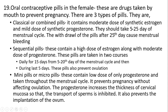Oral contraceptives in females: drugs taken by mouth to prevent pregnancy. There are three types. Classic or combination pills contain a moderate dose of synthetic estrogen and a mild dose of synthetic progesterone; they should be taken from the 5th to the 25th day of the menstrual cycle, with withdrawal after the 25th day. Sequential pills contain a high dose of estrogen along with a moderate dose of progesterone; they are taken in two courses for 15 days from the 5th to the 20th day, and during the last 5 days these pills also prevent ovulation. Mini pills or micro pills contain only a low dose of progesterone and are taken throughout the menstrual cycle. They prevent pregnancy without affecting ovulation by increasing the thickness of cervical mucosa, inhibiting transport of sperm, and preventing implantation of the ovum.